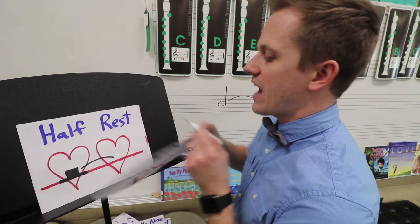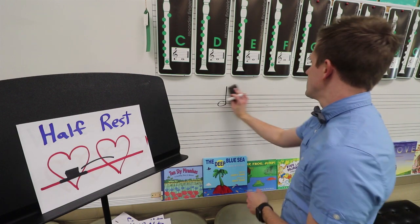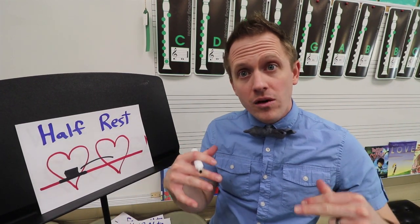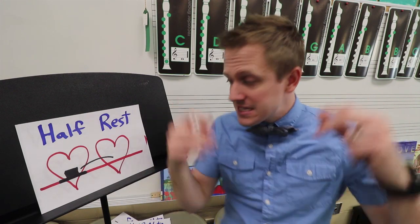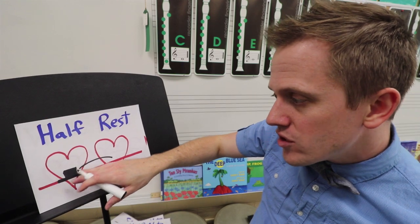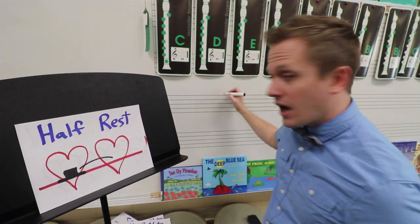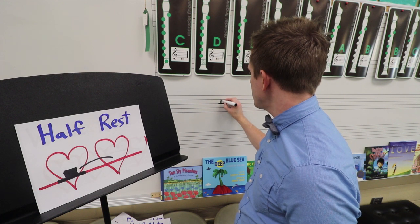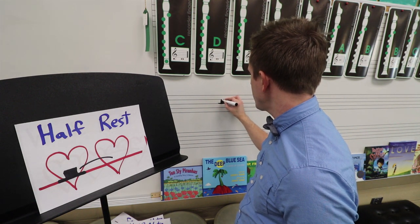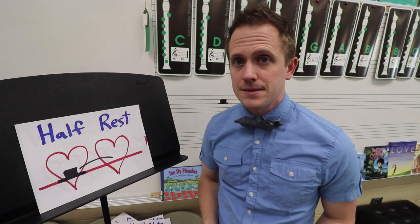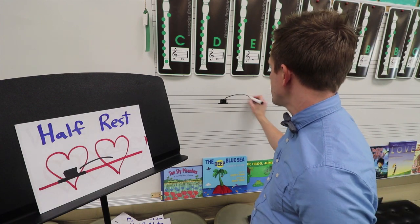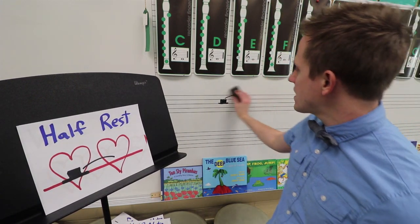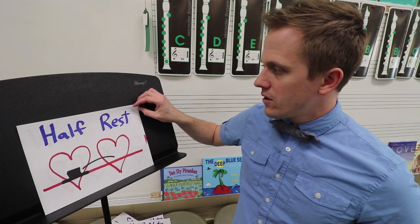After the half note, we've got half rests. To me, a half rest kind of looks like a hat — that's helpful to remember: half rest, hat rest. It almost looks like a little top hat. What you're going to do is find the middle line on your staff, draw the brim of the hat right on that line, and then put a box on top. This is a half rest. It takes up two beats, just like a half note — two beats of silence.